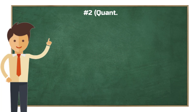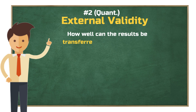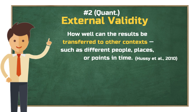Once we've established internal validity, we can think about the next big piece: external validity. This is about whether the results of a study can be transferred to other contexts — like different people, different places, or different points in time. Put simply, external validity is about generalizability.